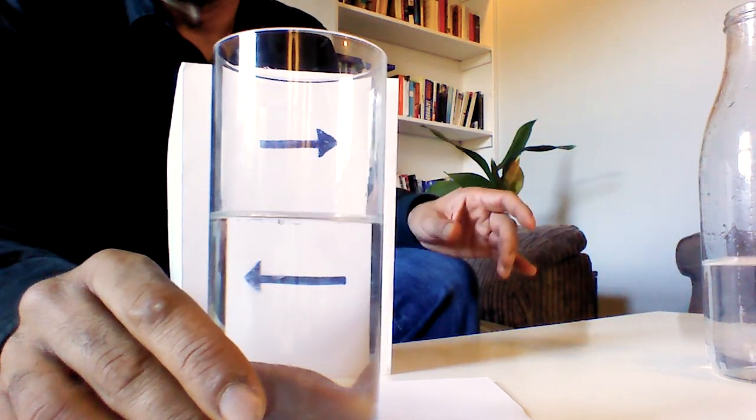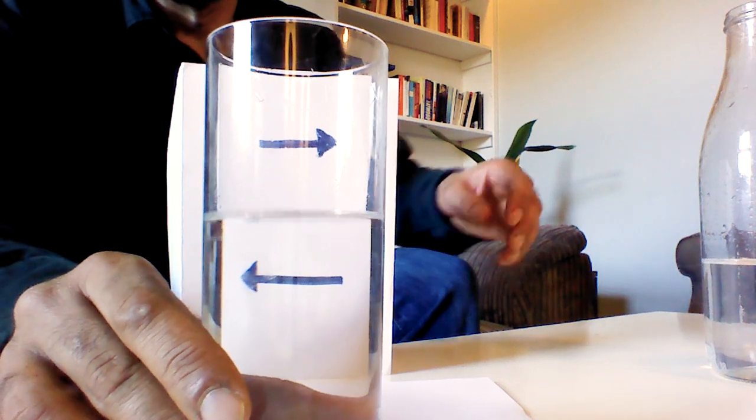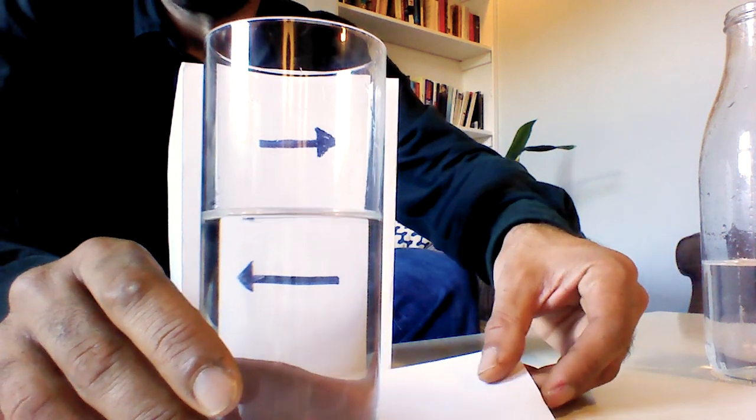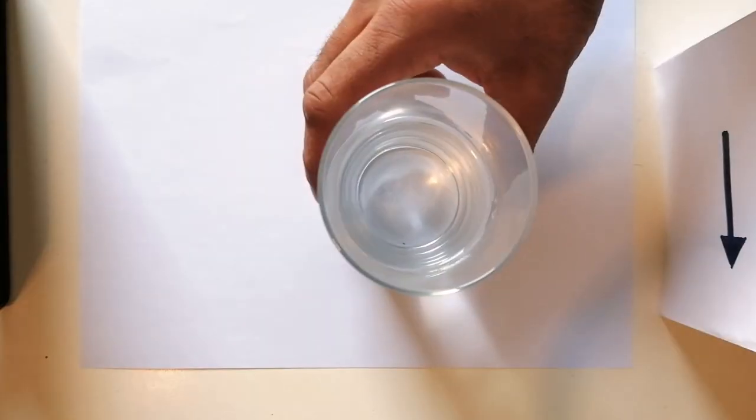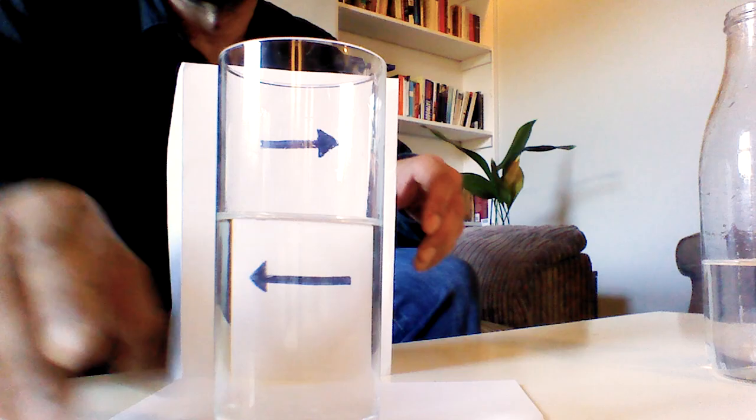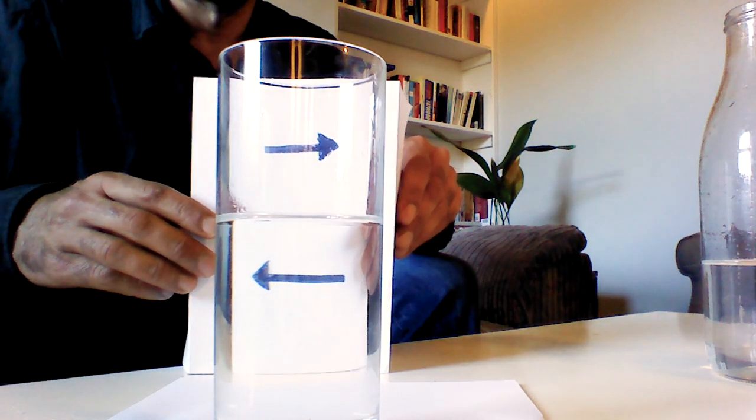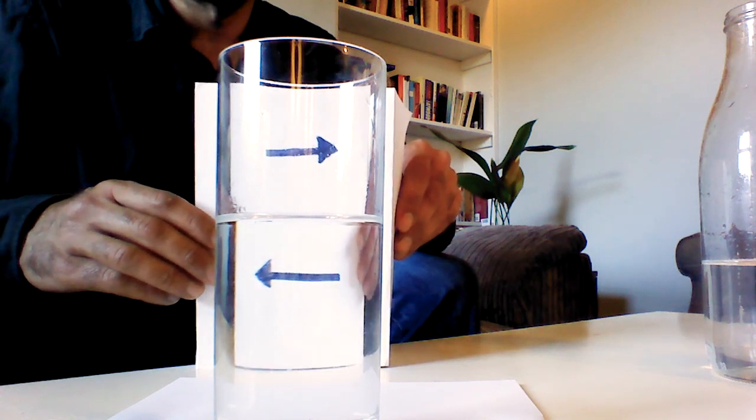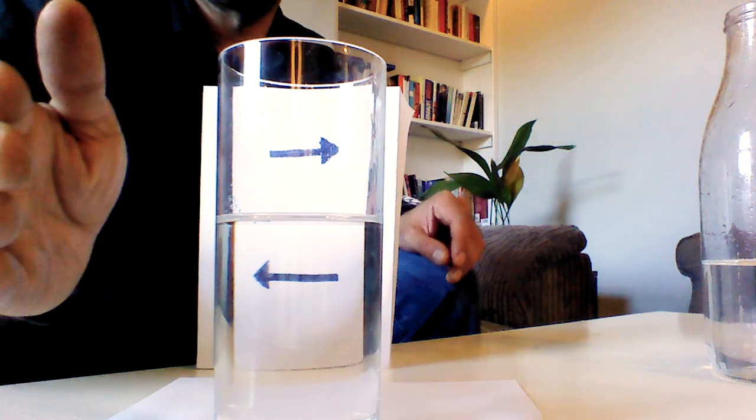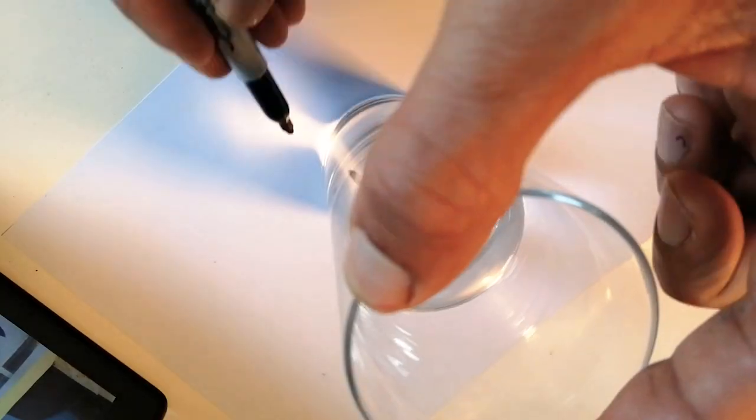Adjust the position of the glass so that the arrow is about the same size. I'm just going to move the arrows back here as well. That looks about right to me, yes. Then mark the position of the glass using a pen.